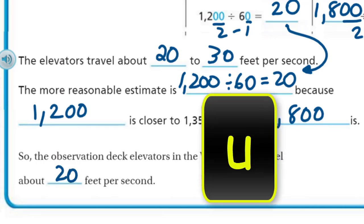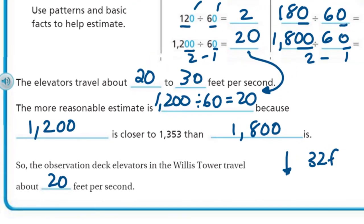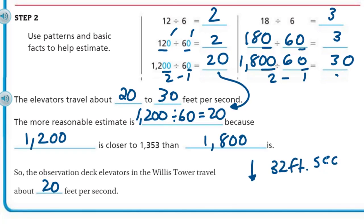So, the observation deck elevators in the Willis Tower travel about 20 feet per second. That's pretty quick. You know, when you think of 20 feet per second every second, gravity pulls down on our planet Earth at 32 feet per second squared. But that means every second, the acceleration coming towards our planet is 32 feet. That's almost the same speed as gravity. 32 feet per second, and here you have 20 feet per second. That's pretty fast. That elevator is cruising. Back to our regular programming.